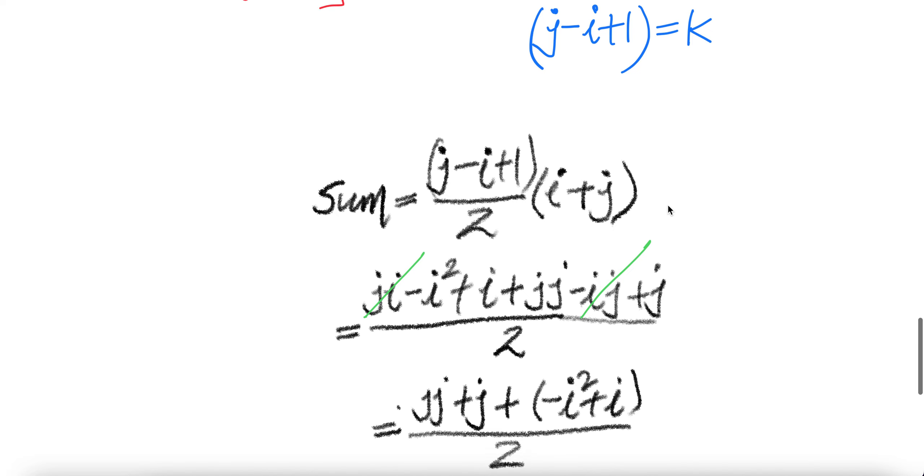So there are J minus I plus one terms. So it'll be one, two, three, four, five, and then this is the J minus I plus one term. So this is the J minus I plus one term.